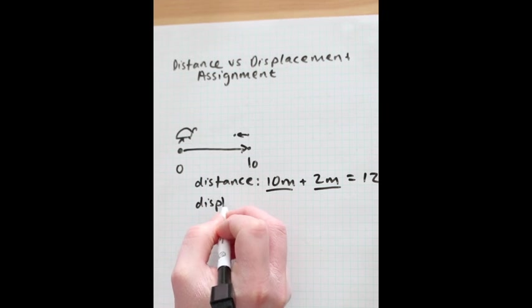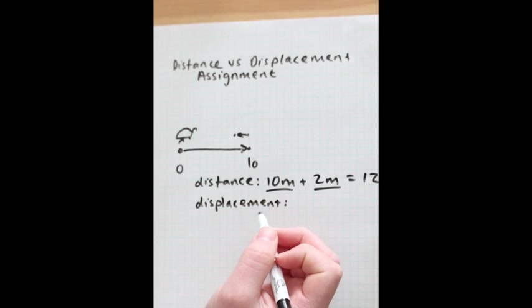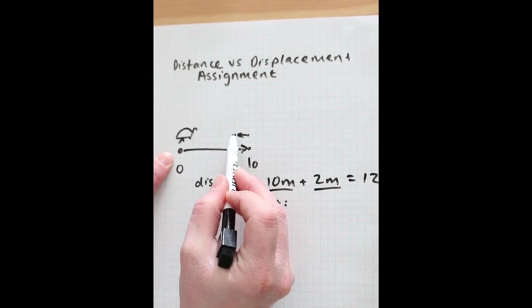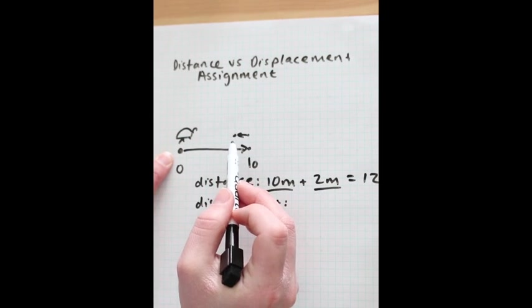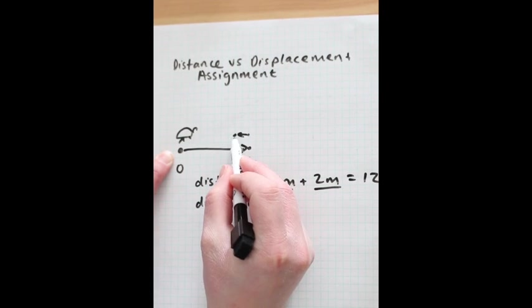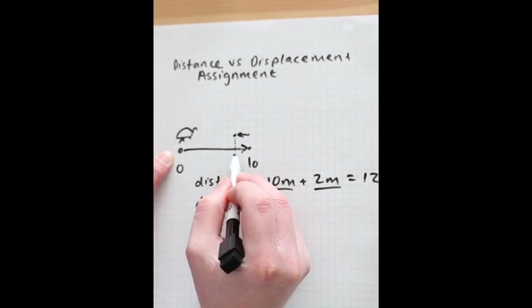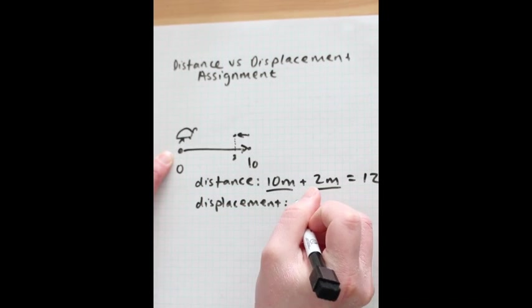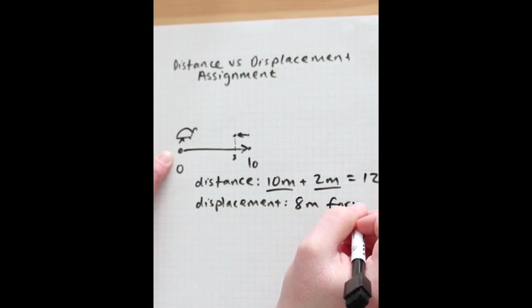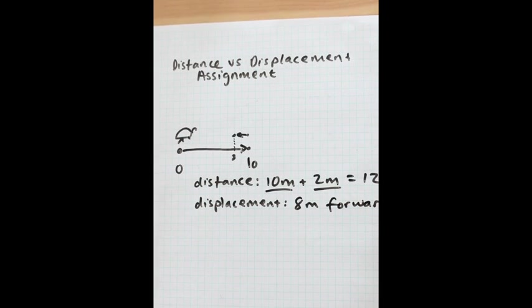Remember, displacement is the distance between the start and finishing point regardless of the route taken. So if it started at position zero and ended here, the displacement is going to be the distance between these two points, which is eight meters. And remember, displacement has to have a direction as well, so it would be eight meters forward.